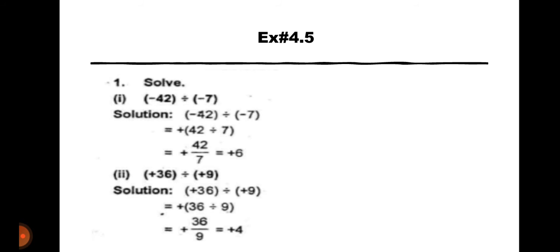As you know, minus times minus equals plus. So 42 divided by 7, 7 sixes are 42. The answer is plus 6.